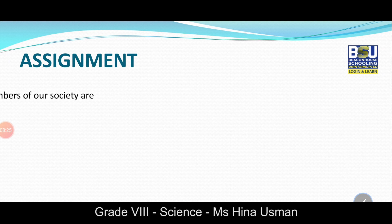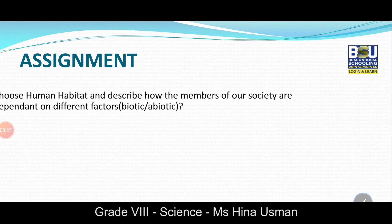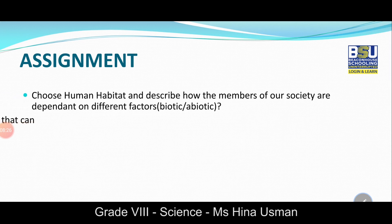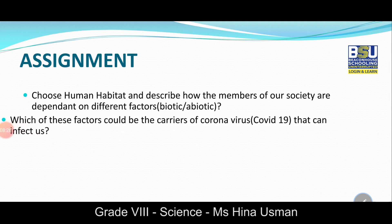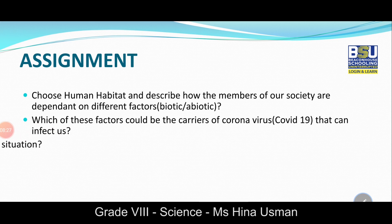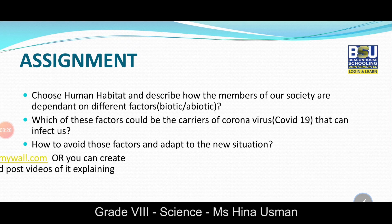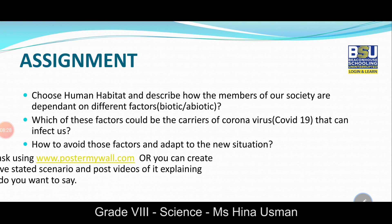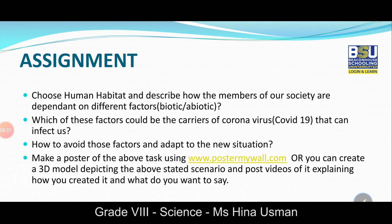Now, coming to the assignment part — dear students of Grade 8, choose a human habitat and describe how the members of our society are dependent on different factors. You have to identify both biotic and abiotic factors of a human habitat, and find out how these factors are affecting humans. Narrow down your biotic and abiotic factors linked to the spread of COVID-19 coronavirus.